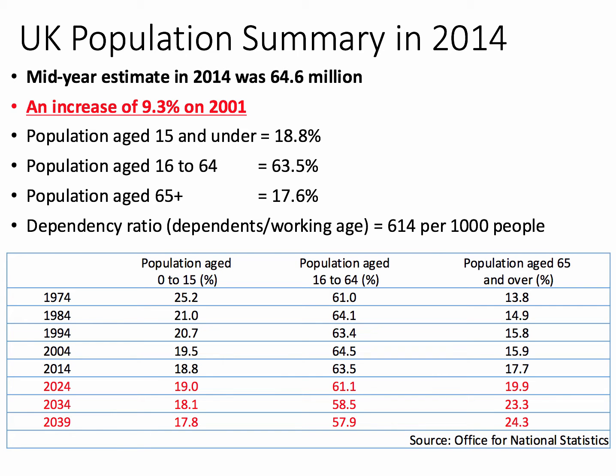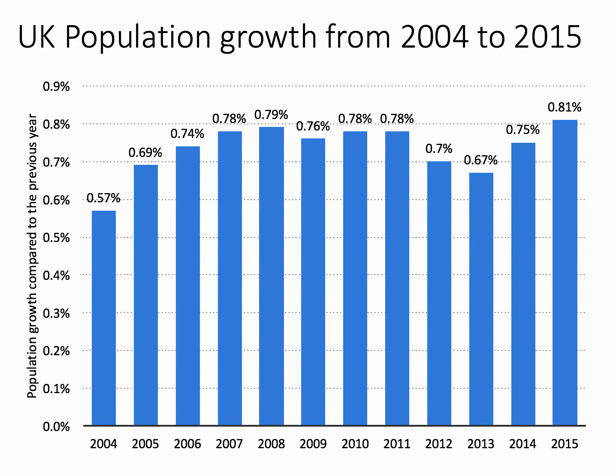Take a moment to look at the population summary for the UK in 2014. The mid-year estimate of the total population was 64.6 million people, and crucially, the UK population has increased by just under 10% since 2001. The average percentage change in the UK population is under 1% per year, averaging around 0.75%, albeit in 2015 the population grew by 0.81%.